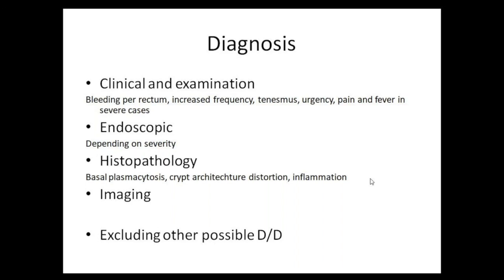The treatment for CMV colitis and C. difficile infection is completely opposite to ulcerative colitis — in UC you give anti-inflammatory agents like steroids to decrease inflammation, whereas in CMV colitis and C. difficile you add antivirals and antibiotics. According to the latest ECCO (European Crohn's and Colitis Organisation) guidelines, ruling out these infections is now mandatory.